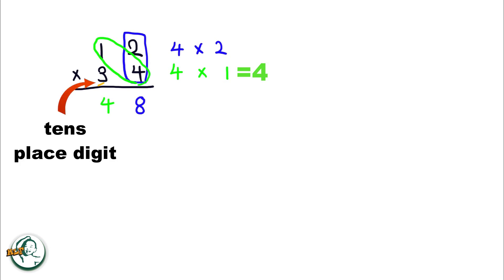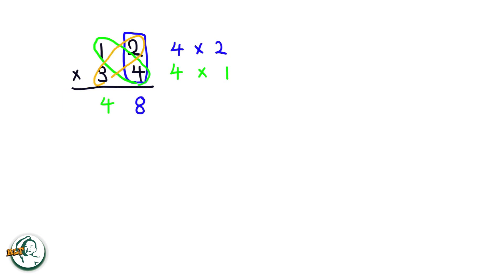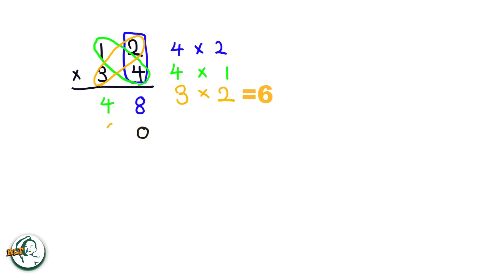Moving on to the tens place digit, 3. We start by writing down a 0. Then 3 multiplied by 2 equals 6, and 3 multiplied by 1 is 3.